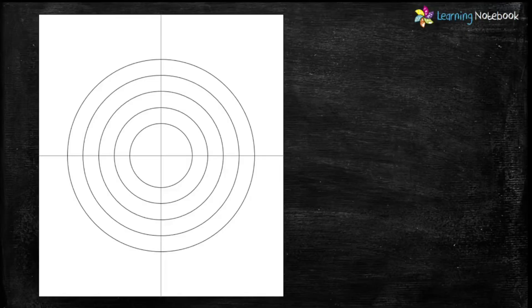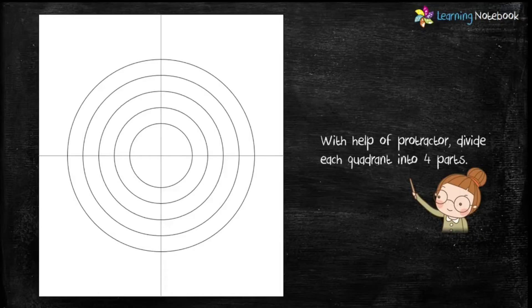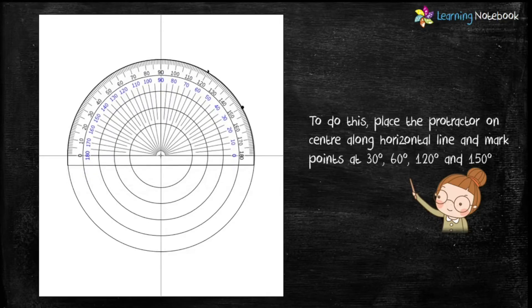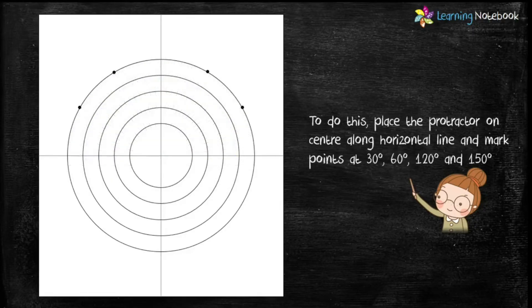So we have drawn five concentric circles. Now with the help of a protractor, divide each of the quadrants into four parts. For this, place the protractor on center along the horizontal line and mark the points at 30 degrees, 60 degrees, 120 degrees, and 150 degrees as shown here.